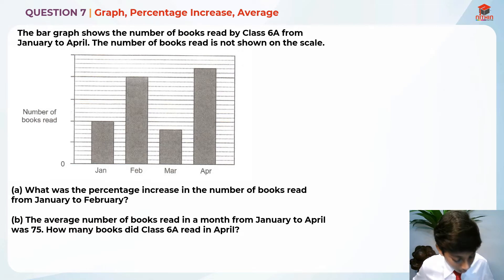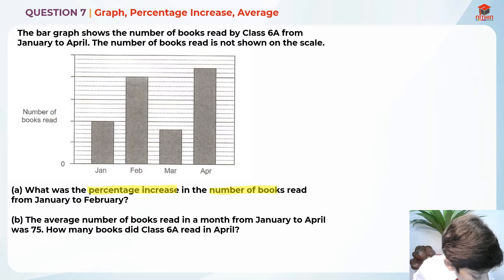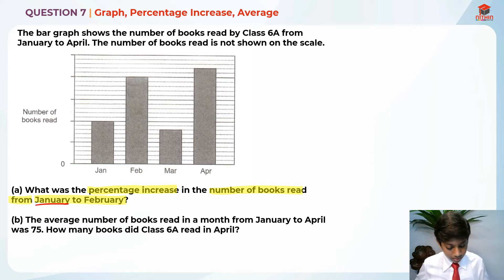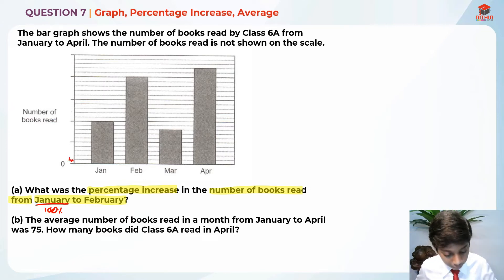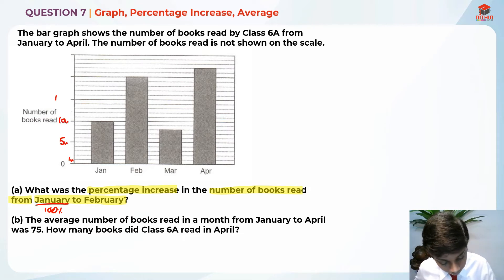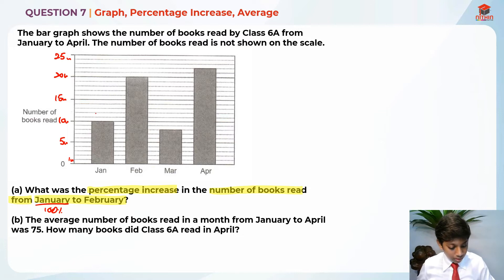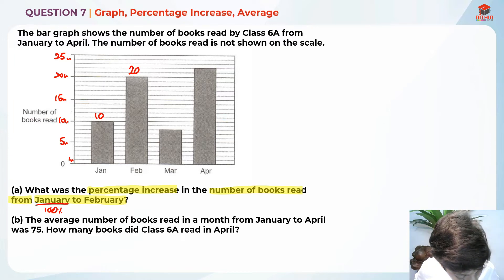So they're asking the percentage increase in the number of books read from January to February. January is the base, so base equals 100%. We do not know the number of books on the scale, so I'm going to take each line as 1 unit. Counting the lines: 5, 10, 15, 20, 25 units. So January is 10 units, February is 20 units, March is 8 units, and April is 22 units.